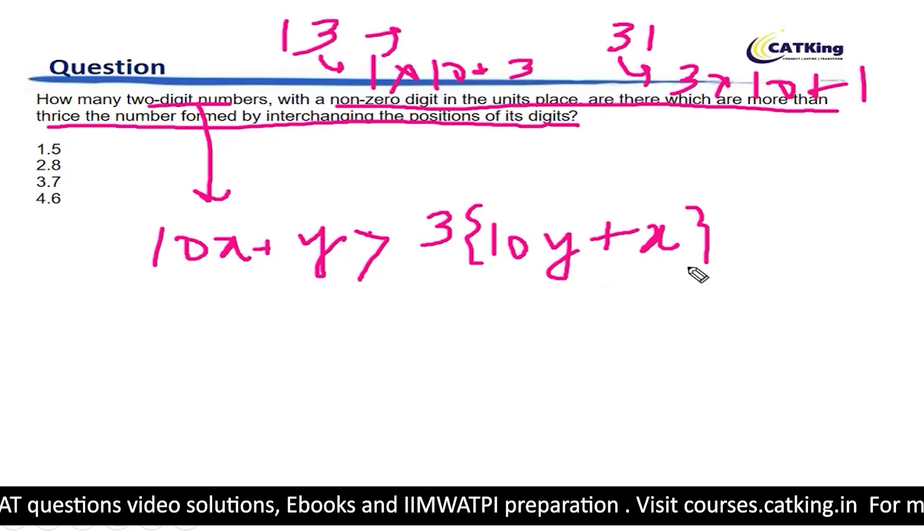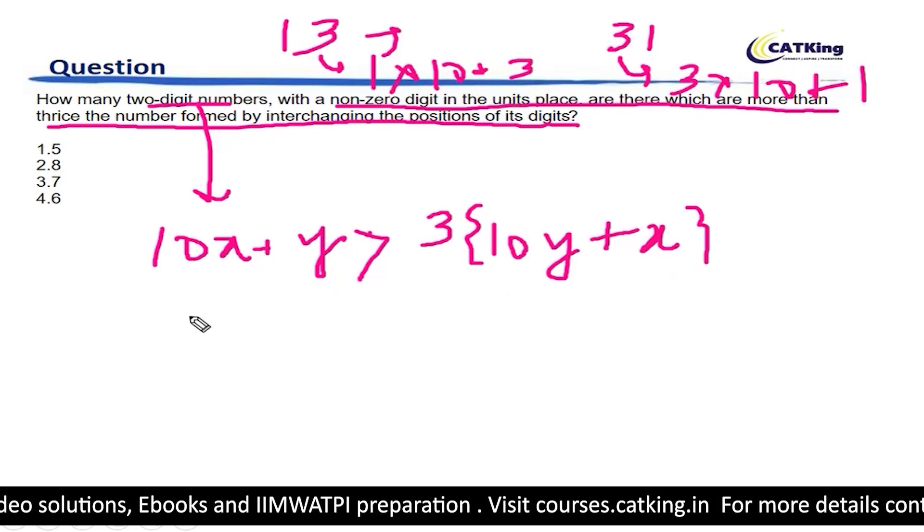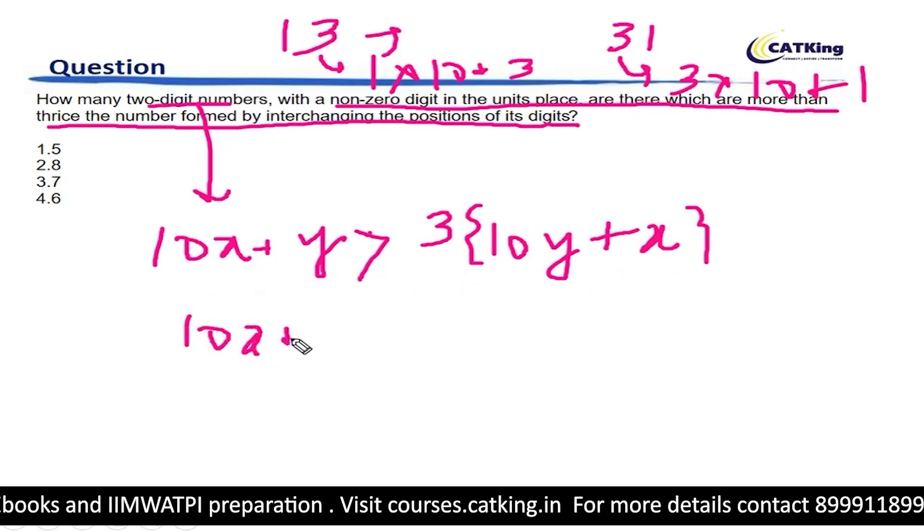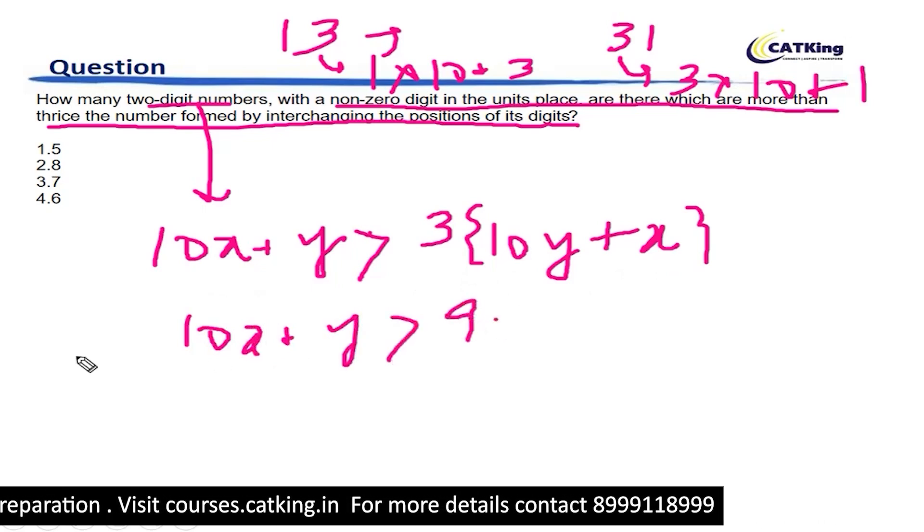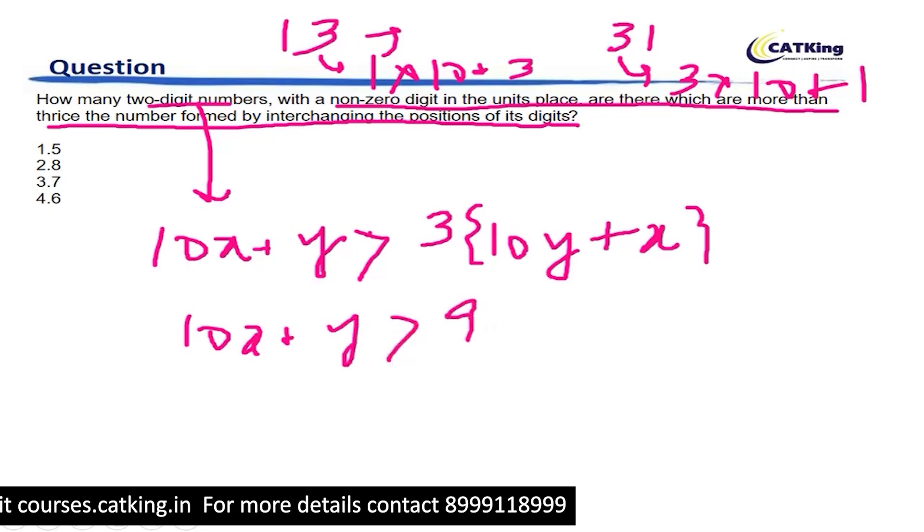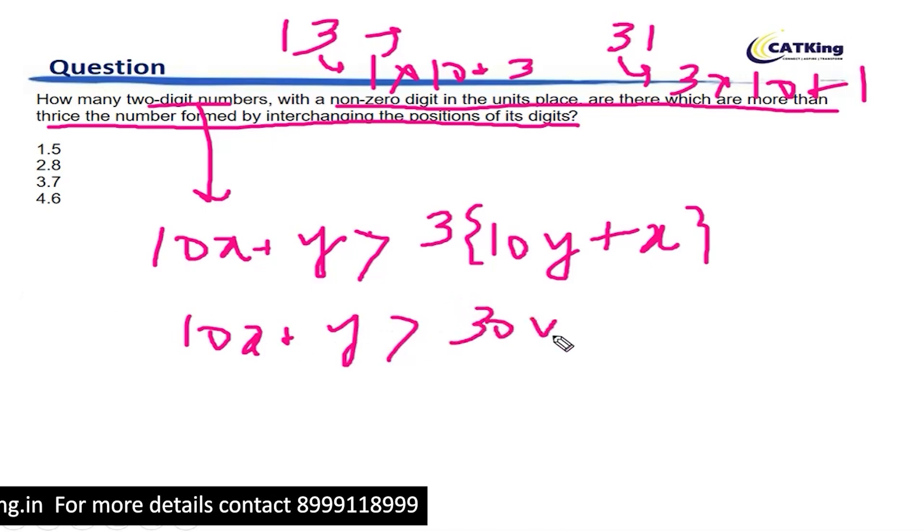So 10x plus y is greater than 3 into 10y plus x. This becomes 10x plus y is greater than 30y plus 3x.